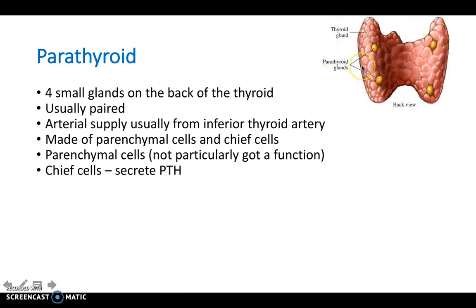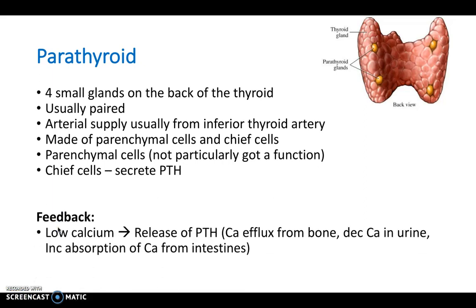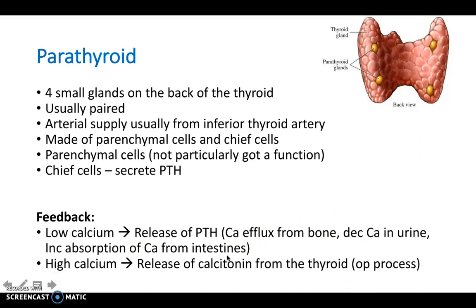PTH does pretty much the opposite of what calcitonin does. It's all about negative feedback and calcium levels, which we'll discuss in proper detail in the next video. As a brief description: if you have a low level of calcium, you want to release PTH because it increases calcium through various mechanisms. Likewise, if you've got too much calcium, you want to release calcitonin from the thyroid to do the opposite process — i.e., reduce calcium levels.